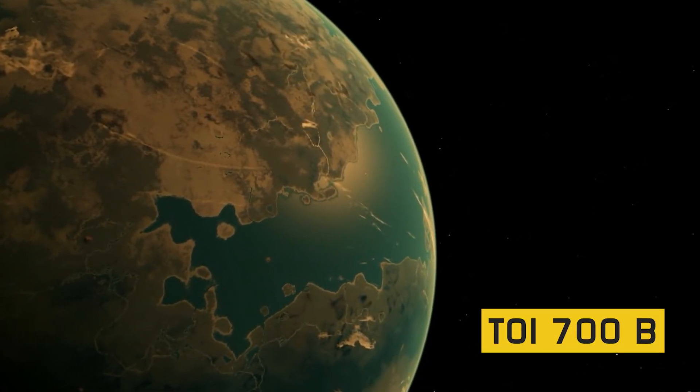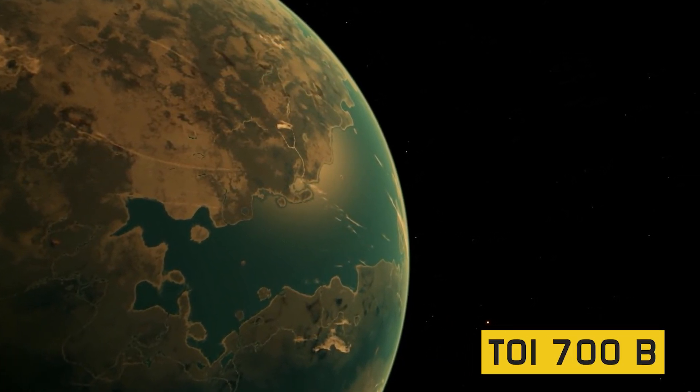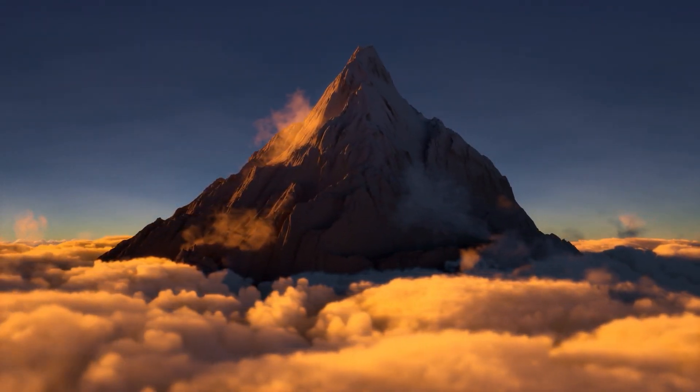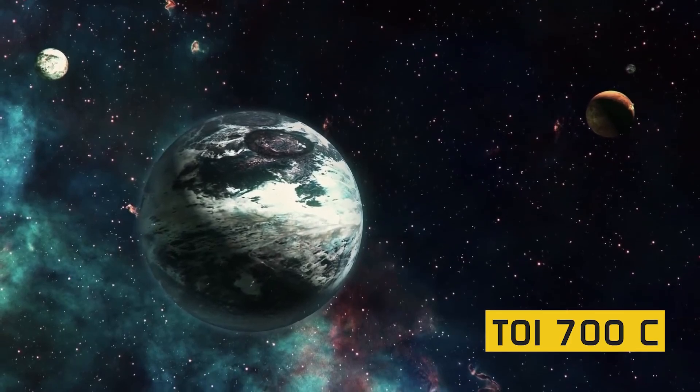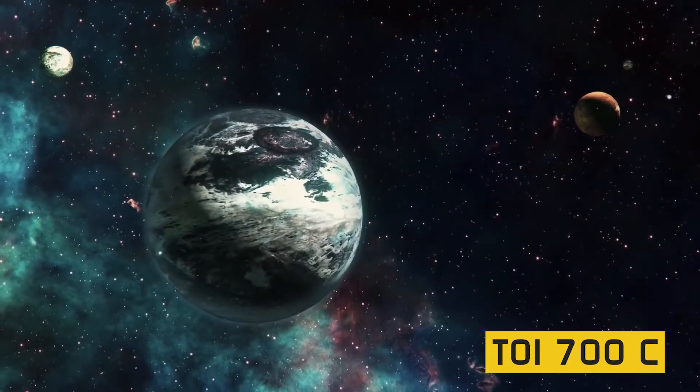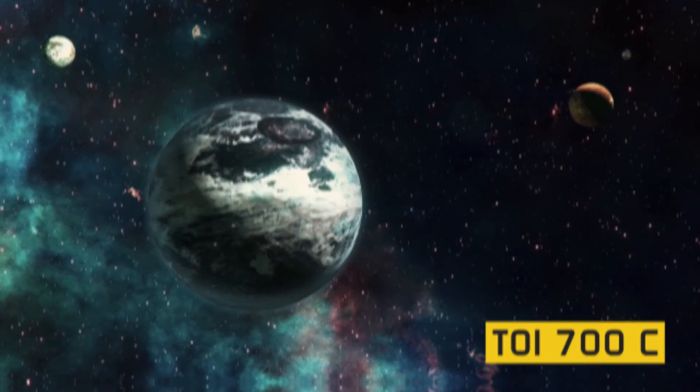The innermost planet, TOI 700B, is almost exactly Earth-size, is probably rocky, and completes an orbit every 10 days. The middle planet, TOI 700C, is 2.6 times larger than the Earth and orbits every 16 days. However, that one might be a gas-dominated planet.